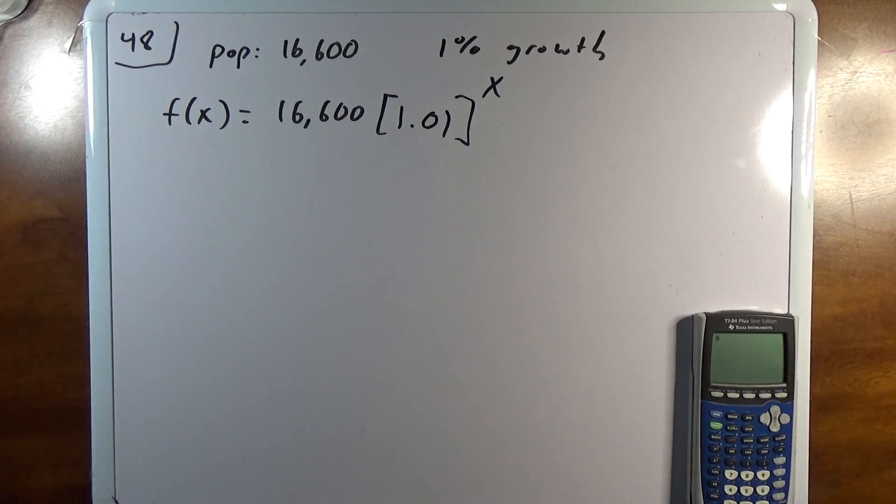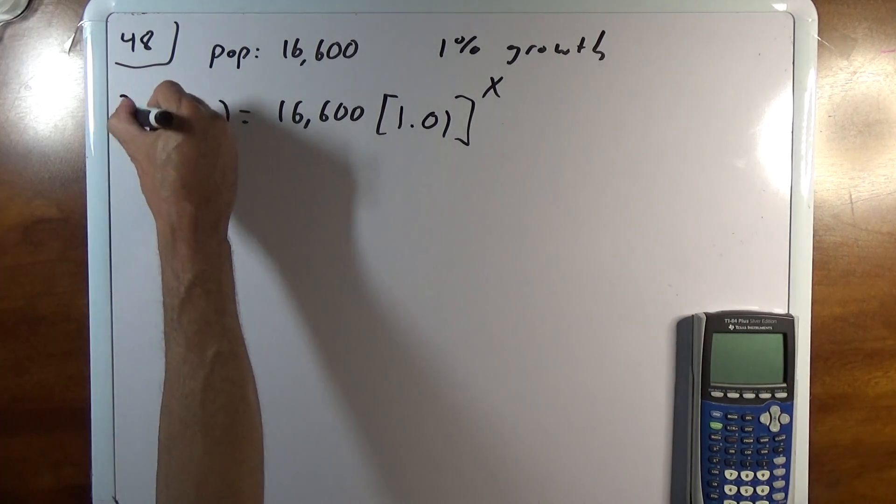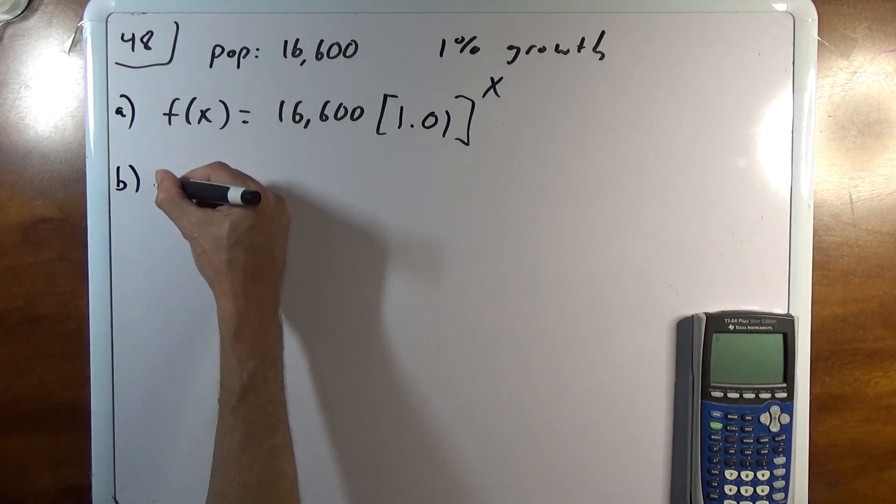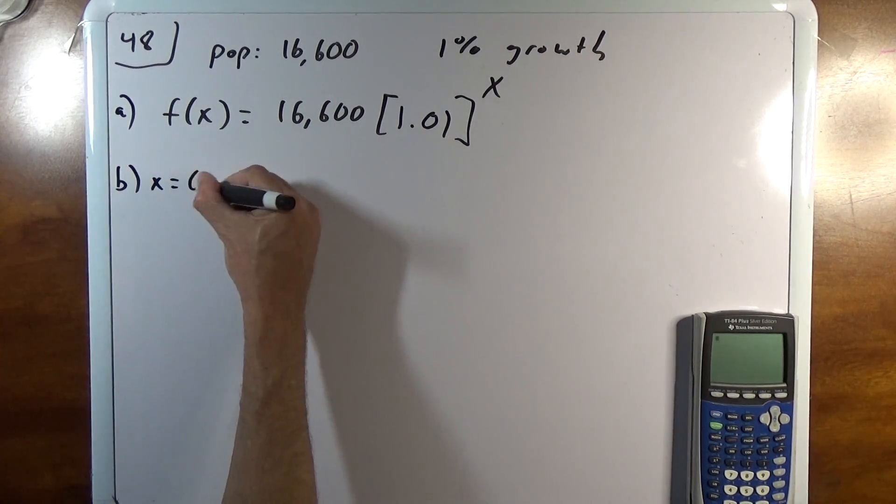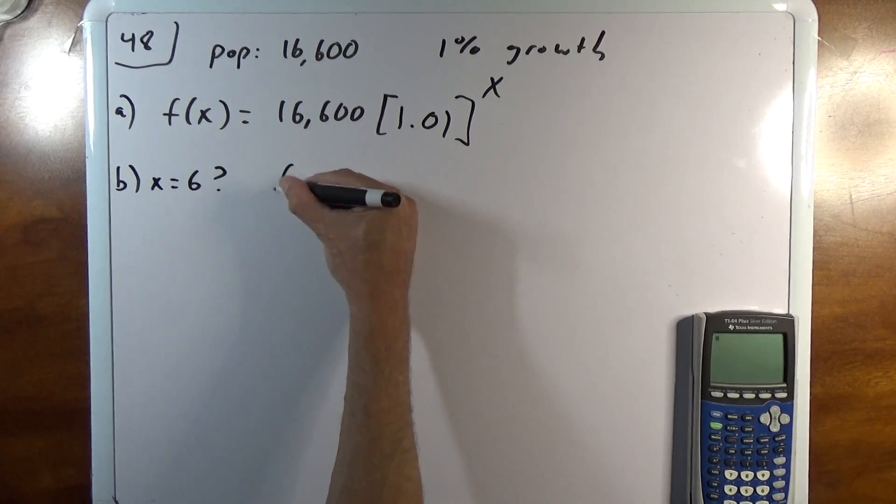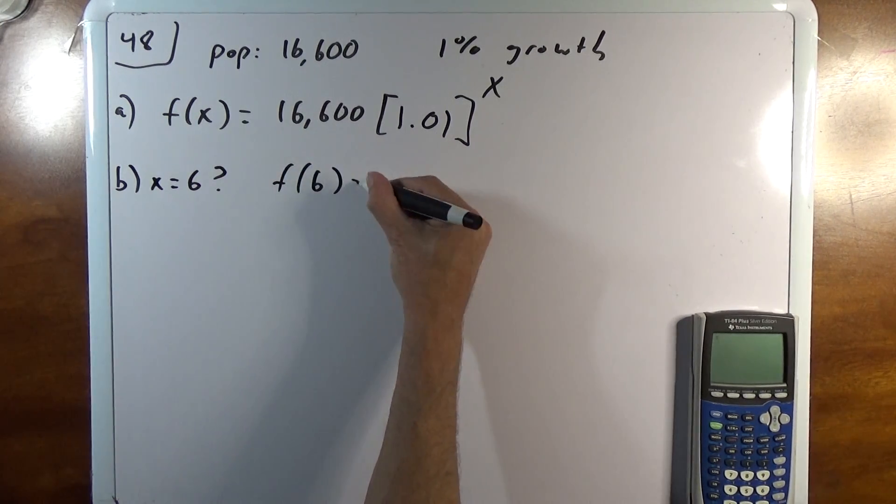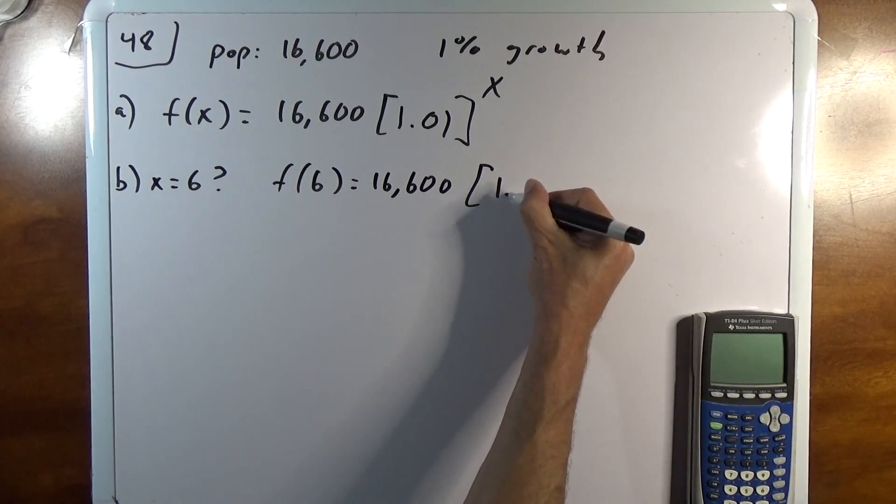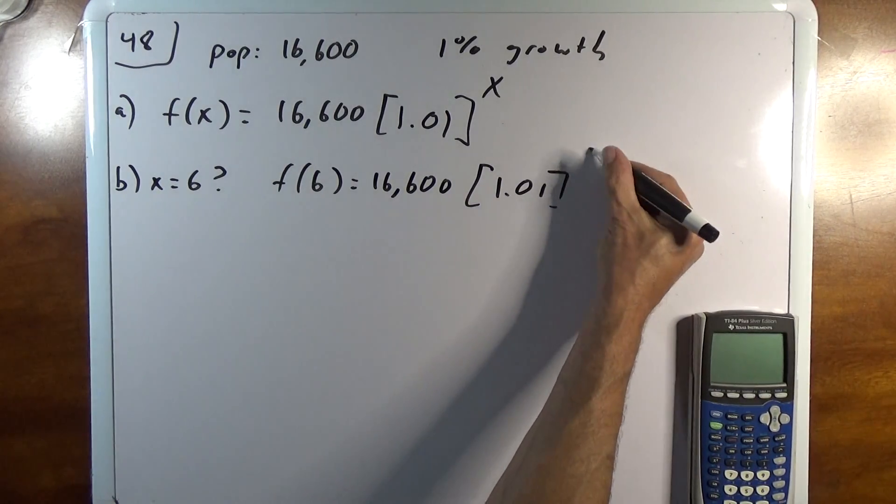So what can we do with an equation like this? We can answer, so this is A, right, this is write the equation. B says what happens after 6 years? So I say, well, F of 6 is equal to 16,600 times 1.01 to the 6th.